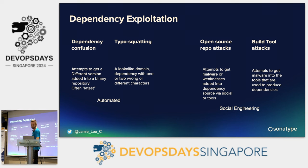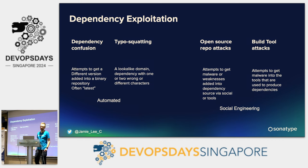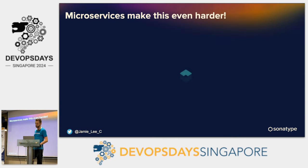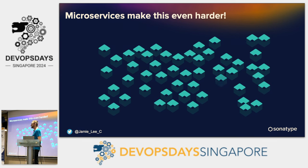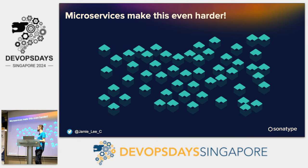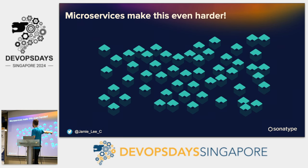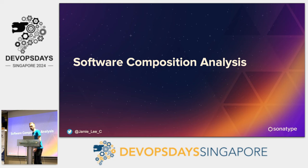There are lots of different ways they can do that: dependency confusion, typo squatting, open source repo attacks, build tool attacks. We've got to be on our toes to make sure we're protected. And microservices don't make this any easier. When we had one big monolith, that was fine. Now we've got to update dependencies in hundreds of services, so this gets even more complicated.